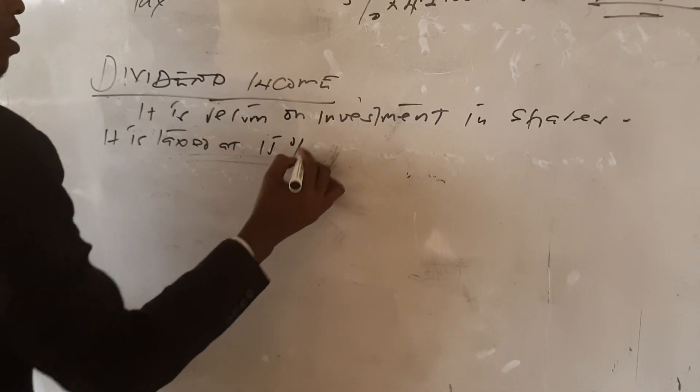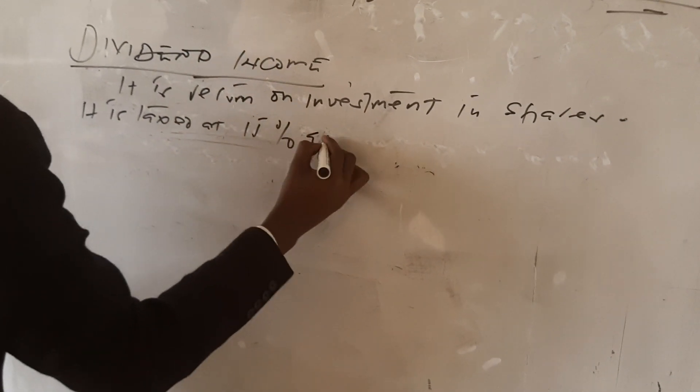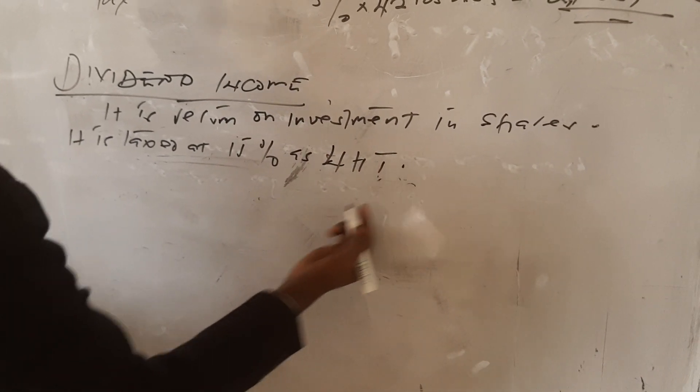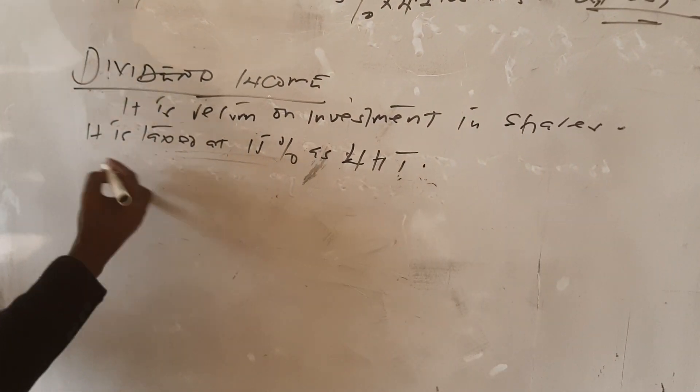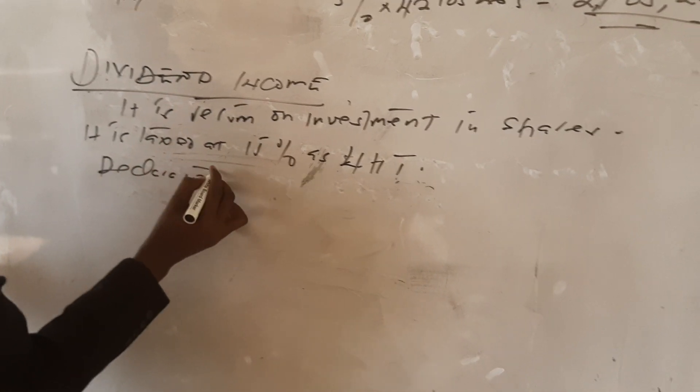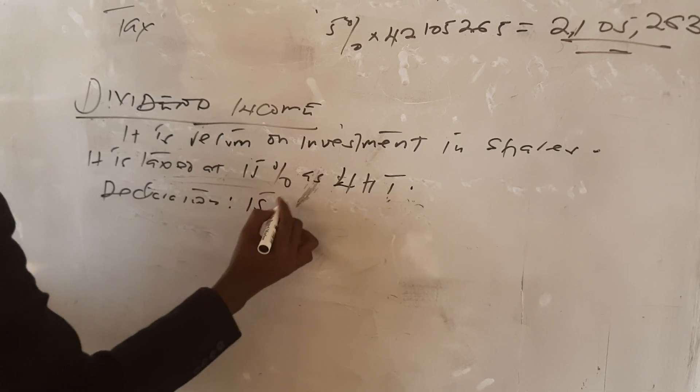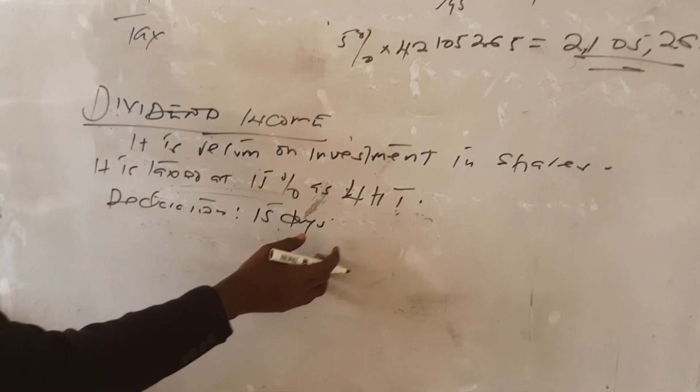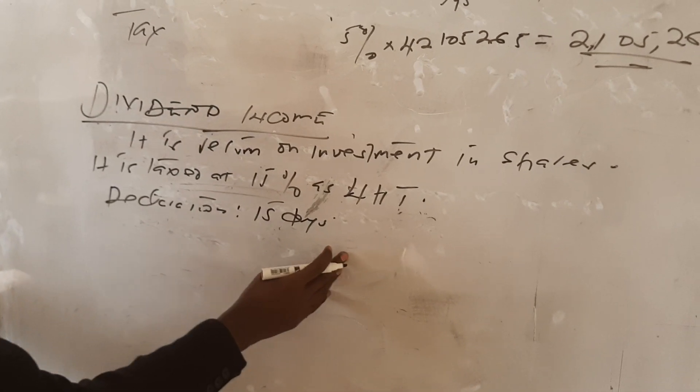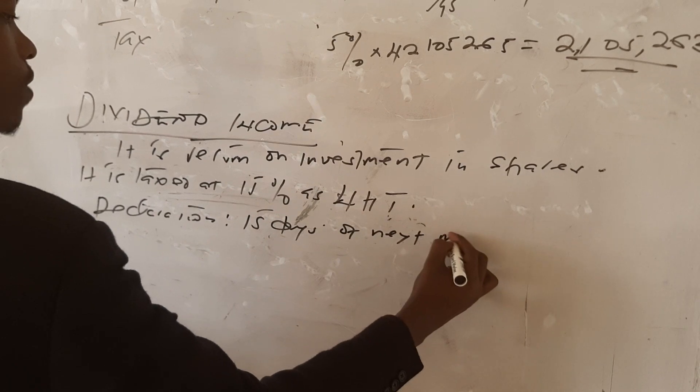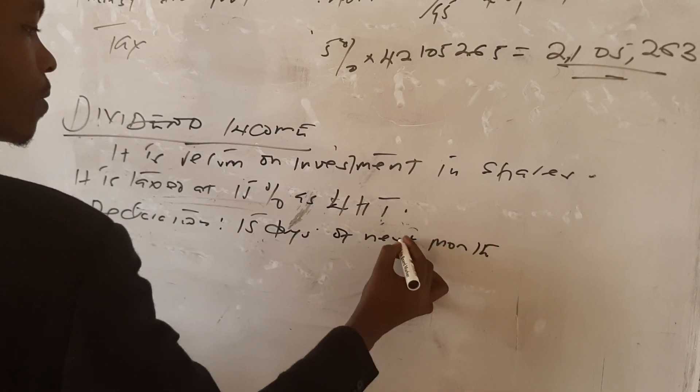The declaration is 15 days of the next month.